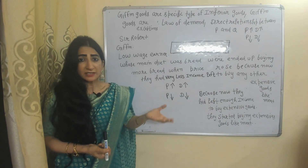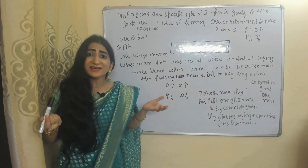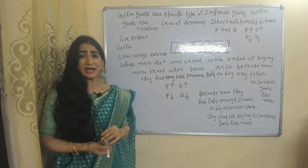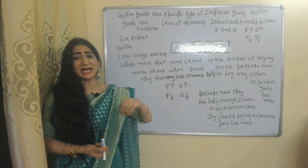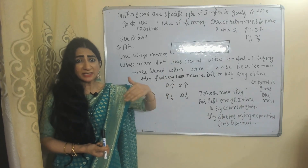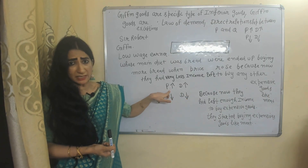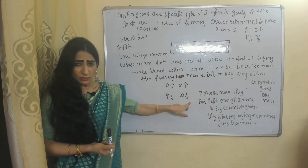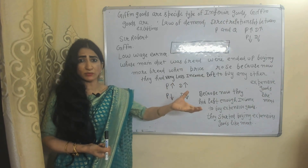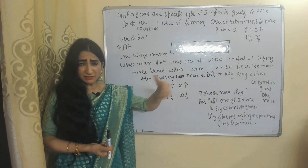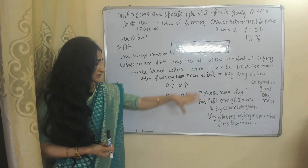The concept of Giffen goods was given by Sir Robert Giffen when he observed low wage earners whose main diet was bread. They ended up buying more bread when the price of bread increased, because they had very little income left to buy expensive goods like meat, so they increased demand for bread. When the price of bread fell, they reduced demand for bread because they then had enough money to buy meat instead.